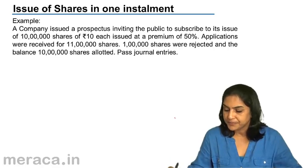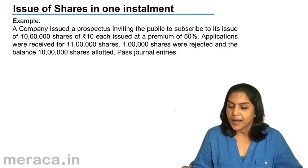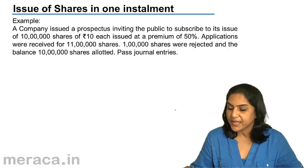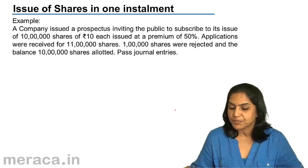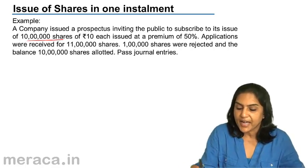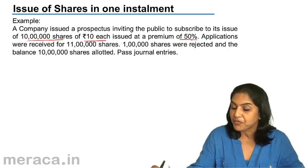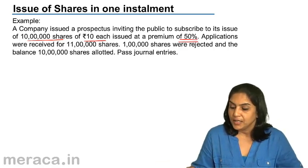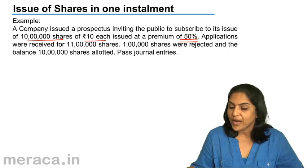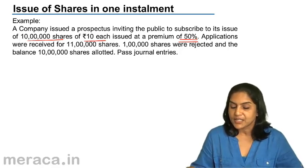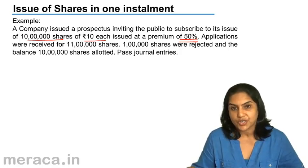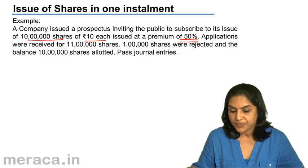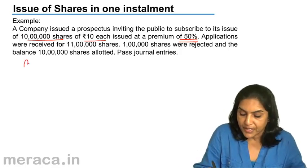A quick example: a company issued a prospectus inviting the public to subscribe to its issue of 10 lakh shares of ₹10 each at a premium of 50 percent. Applications were received for 11 lakh shares. 1 lakh shares were rejected and the balance 10 lakh shares were allotted. Let us pass journal entries.